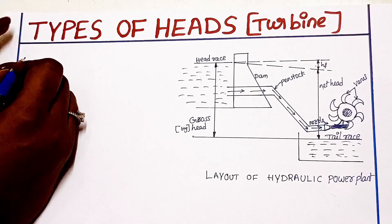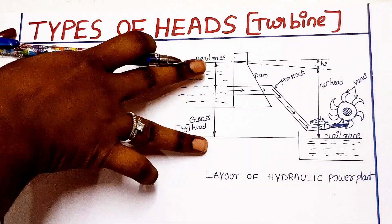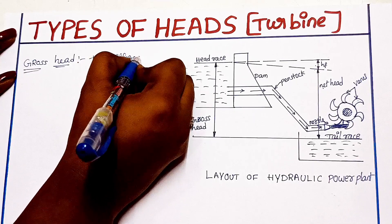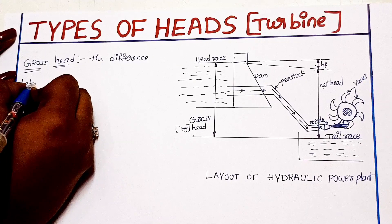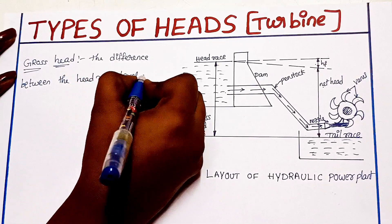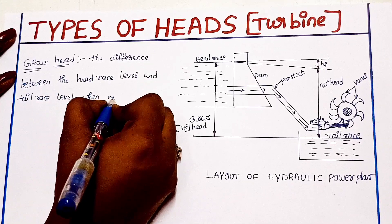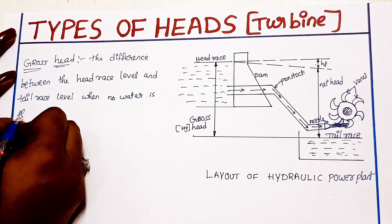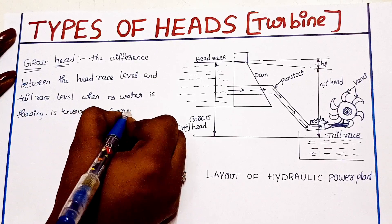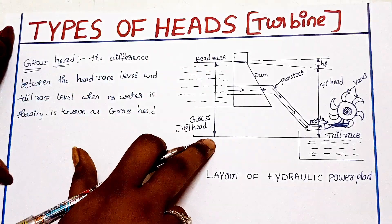Gross head is the difference between the headrace level and the tailrace level when no water is flowing. That difference is known as gross head. The high top level to the bottom level — that is gross head.